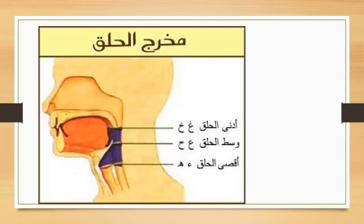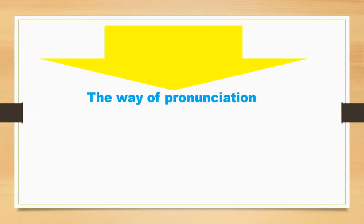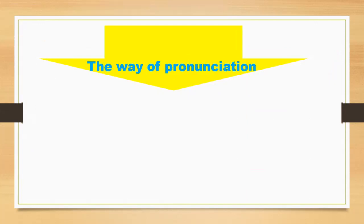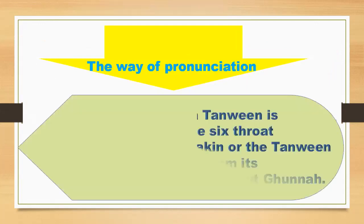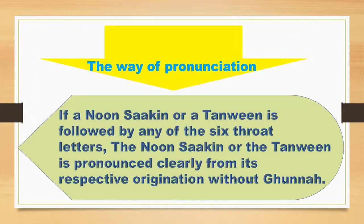The sound of these letters comes from the throat. The way of pronunciation: if a Noon Sakin or a Tanwin is followed by any of the six throat letters, the Noon Sakin or the Tanwin is pronounced clearly from its respective point of articulation.